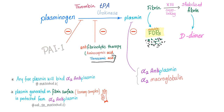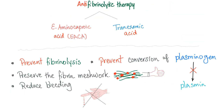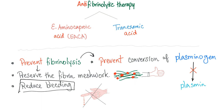Many authors argue that tranexamic acid is more potent than aminocaproic acid. This slide is the foundation for what's coming next. Anti-fibrinolytic therapies are anti-TPA — they include aminocaproic acid and tranexamic acid. They prevent fibrinolysis — they prevent the conversion of plasminogen into plasmin — therefore they preserve the fibrin meshwork and reduce bleeding. Makes perfect sense.